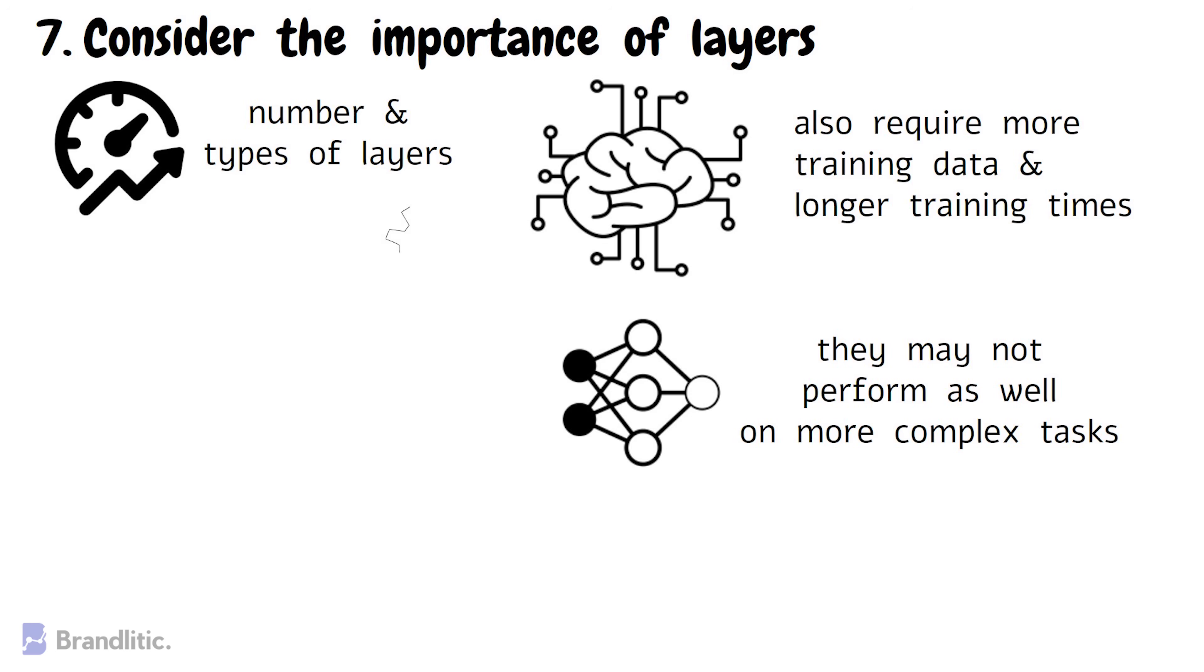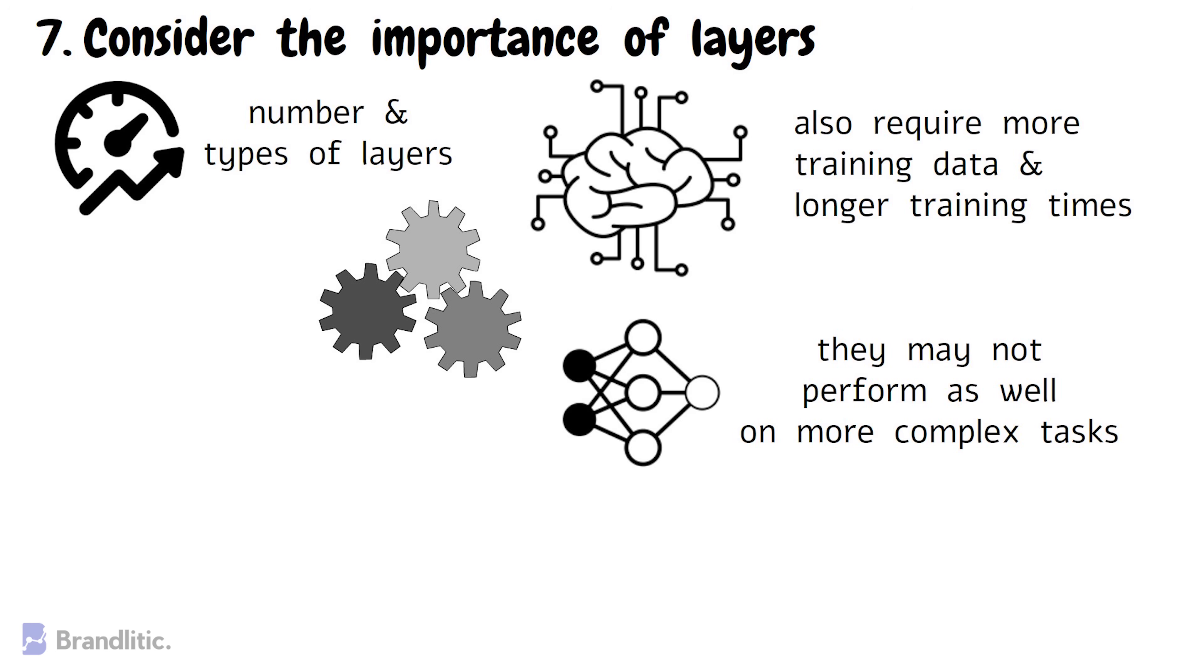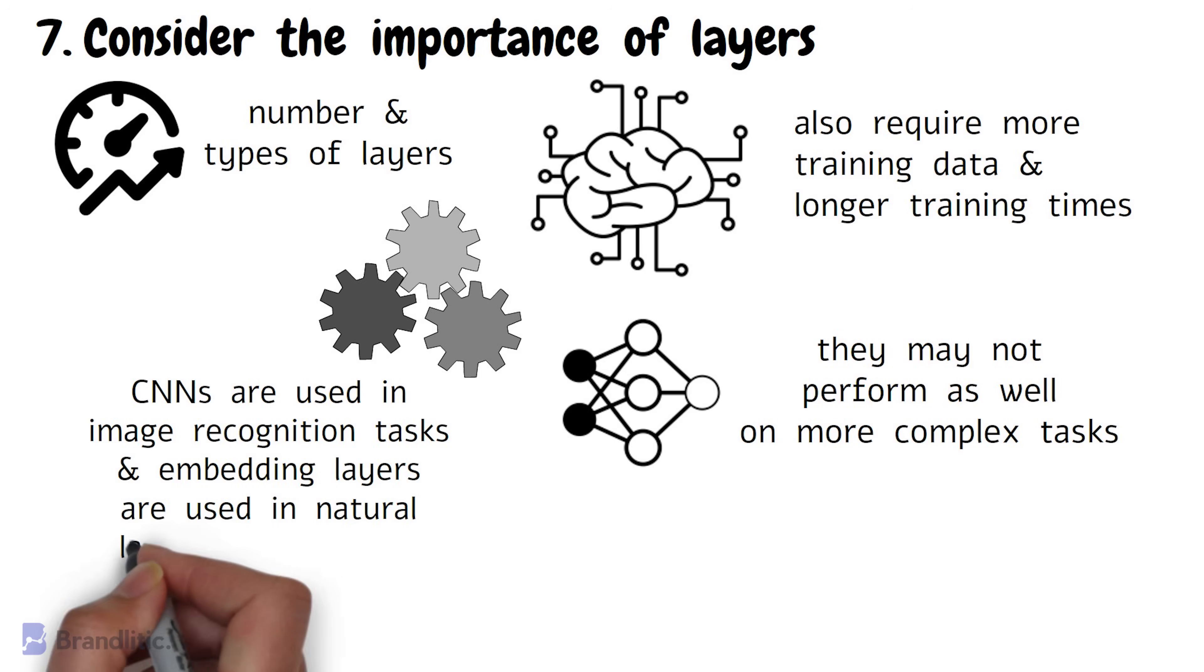It's also important to consider the types of layers you include in your neural network architecture. For example, in an image recognition task, convolutional layers are commonly used to extract features from image data. In natural language processing tasks, embedding layers are used to transform text data into a numerical format that can be processed by the neural network.